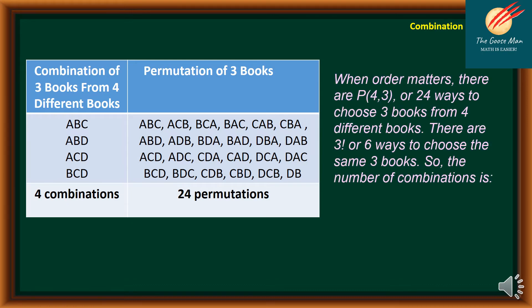So when order matters, there are P(4,3) — meaning out of four books we consider three books at a time — or 24 ways to choose three books from four different books. There are 3 factorial, or six, ways to arrange the same three books. So the number of combinations is 24 divided by 3 factorial, which is equal to 4.